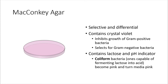Next we have MacConkey agar. MacConkey agar is like the MSA plate — both selective and differential. It contains crystal violet, which inhibits the growth of gram-positive bacteria and selects for gram-negative bacteria. It also contains lactose and a pH indicator. This means that coliform bacteria, which are defined as bacteria capable of fermenting lactose into acid, become pink and turn the media pink. Not only do they turn the media around them pink, but the growth itself gives off a pink pigmentation. On this plate you'll be looking at E. aerogenes, E. coli, S. typhimurium, and S. aureus.